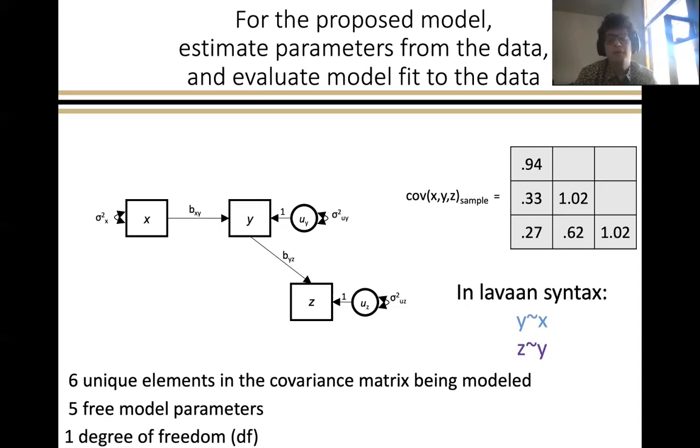Within structural equation modeling, you'll hear people talk about the degrees of freedom of the model, and that refers to how many parameters you estimated relative to how many parameters you could have estimated given the unique elements in the covariance matrix. So for a three-variable covariance matrix, you have six unique elements, which refers to the three variances on the diagonal and the three covariances on the off diagonal. And in our model, we've only estimated five of those parameters, where specifically, we did not estimate the regression or covariance relationship between X and Z. So that means we have one degree of freedom and can be thought of as specifying a model that provides a more parsimonious or simplified set of relationships relative to what we observe in the data.